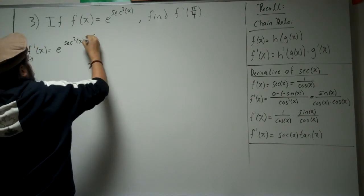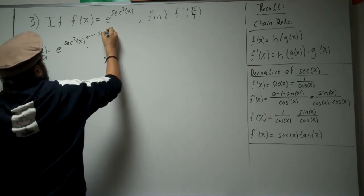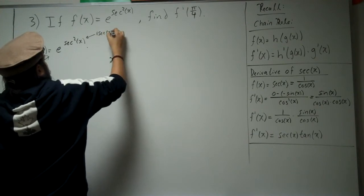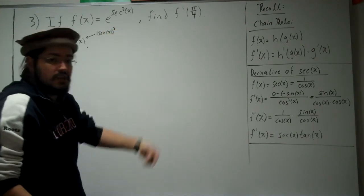But this right here can be written as secant of x, all of that squared. So that's another chain rule we've got to use.